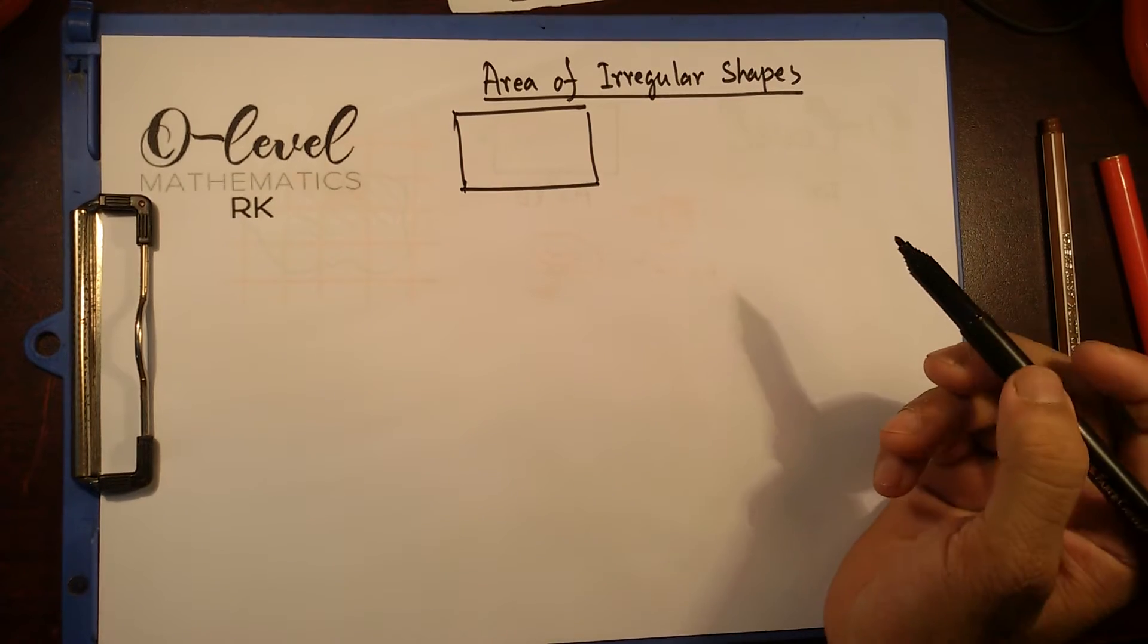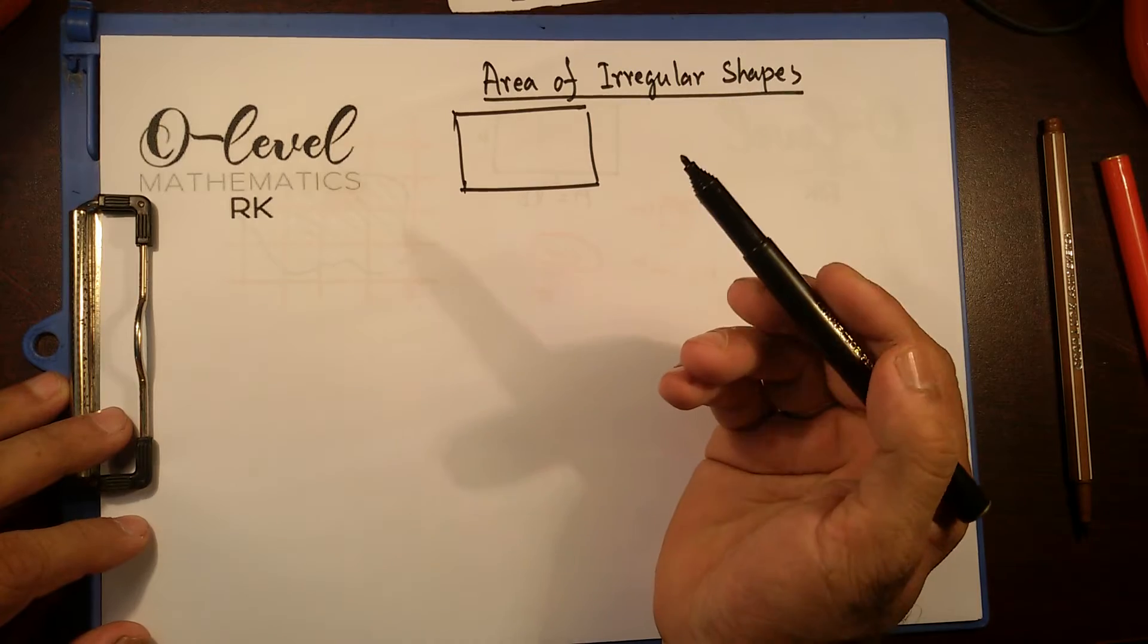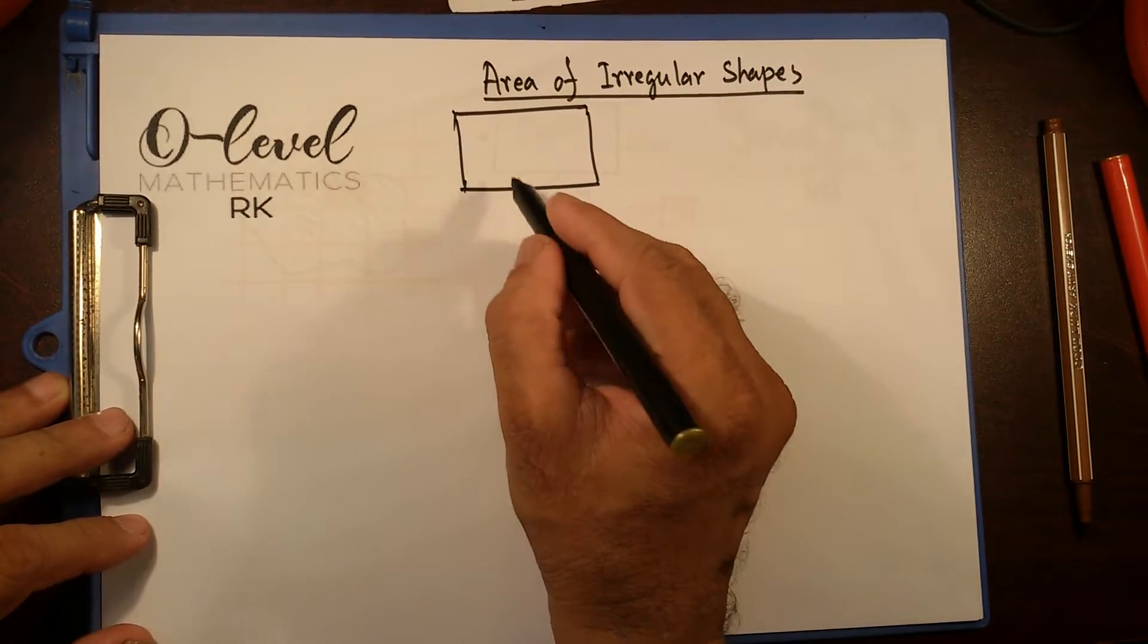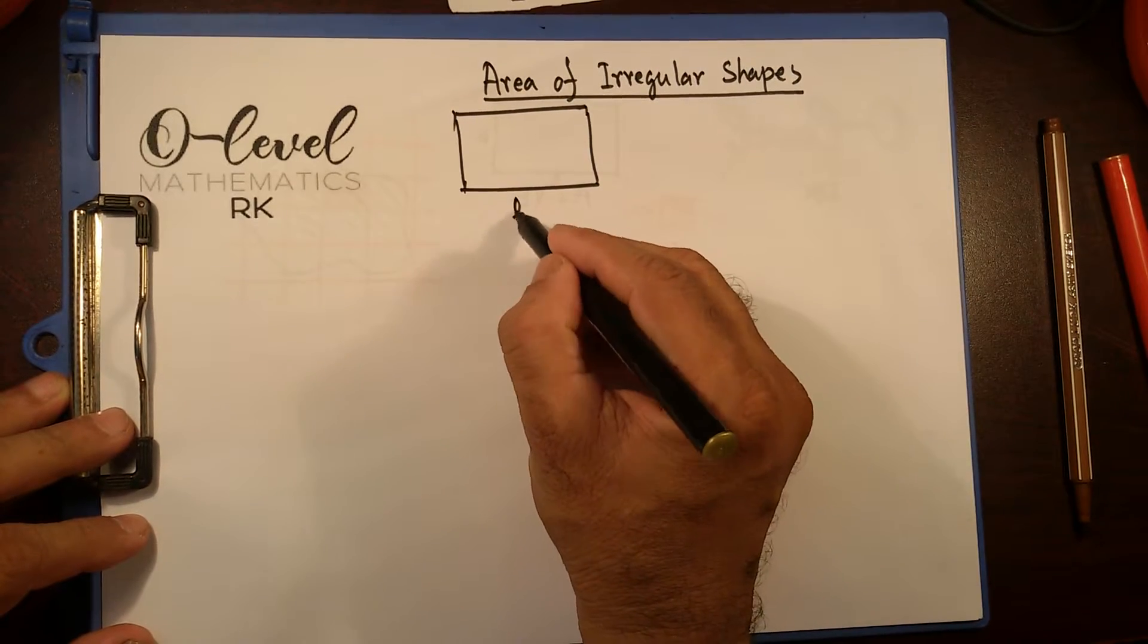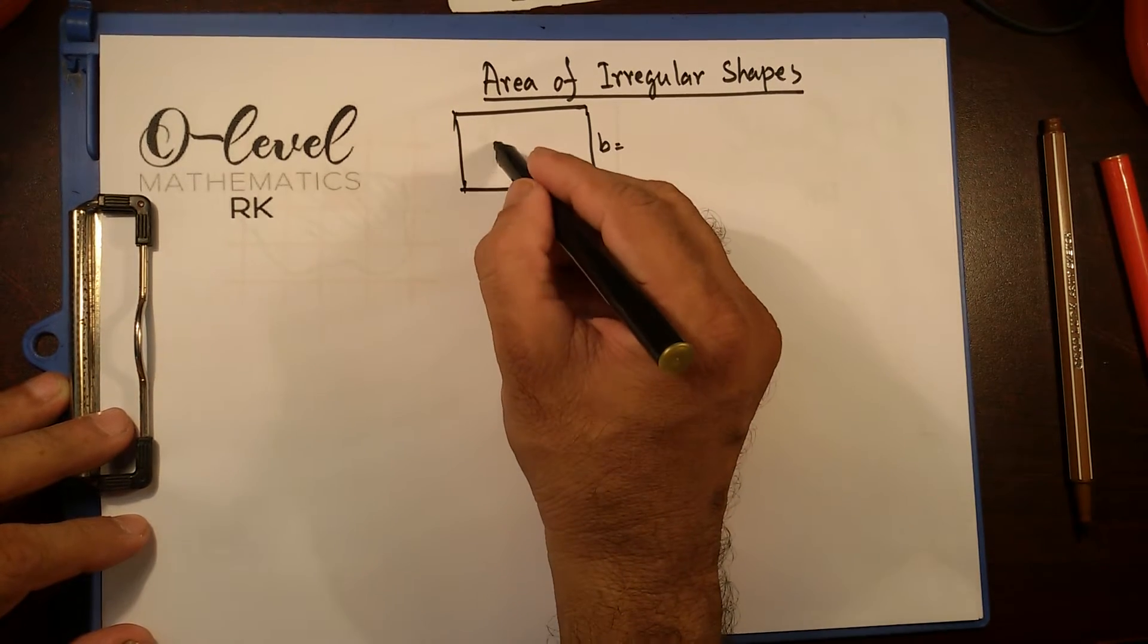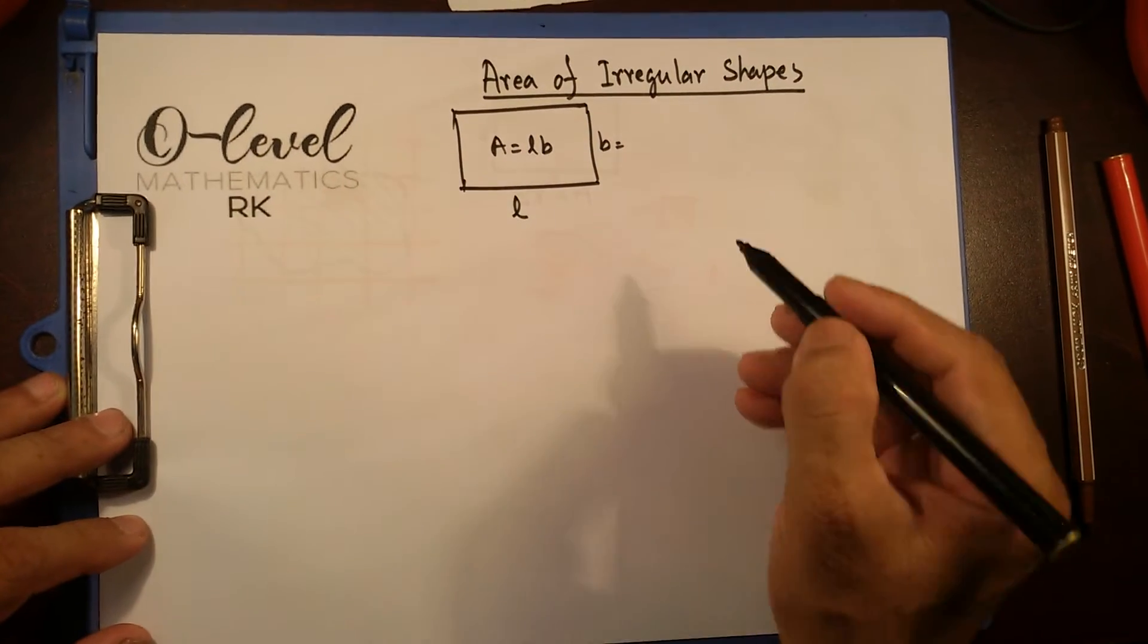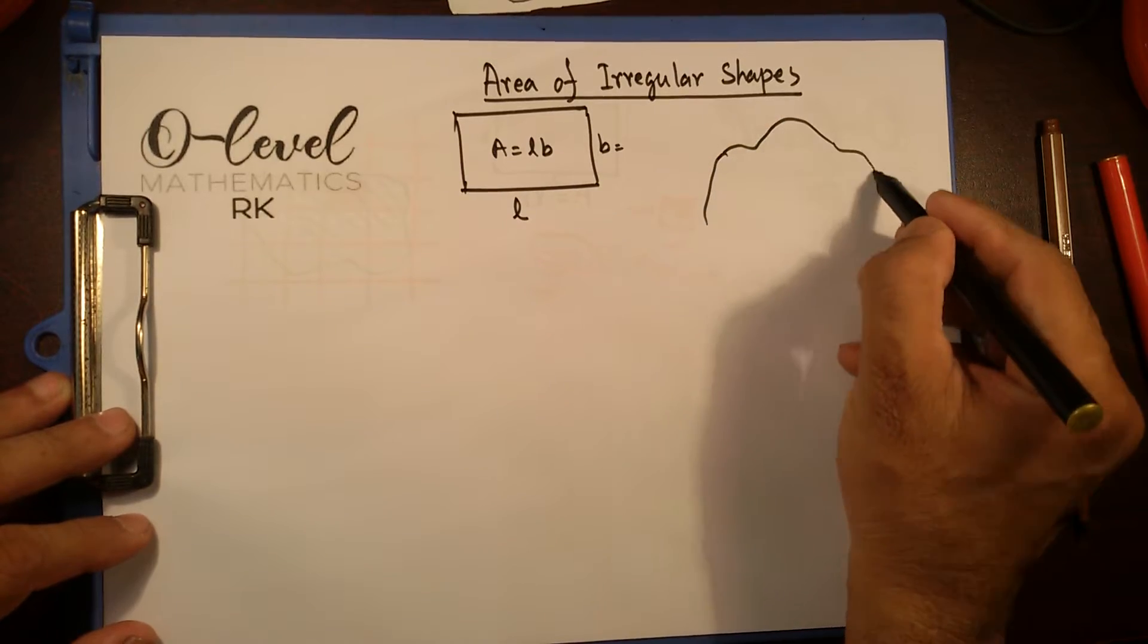Good morning students. On today's lecture I'll show you how to calculate or find out area of irregular shapes. In my last video I showed you how to find out area of rectangular shape if the horizontal side is length and breadth, and area we can find out by multiplying length into breadth.